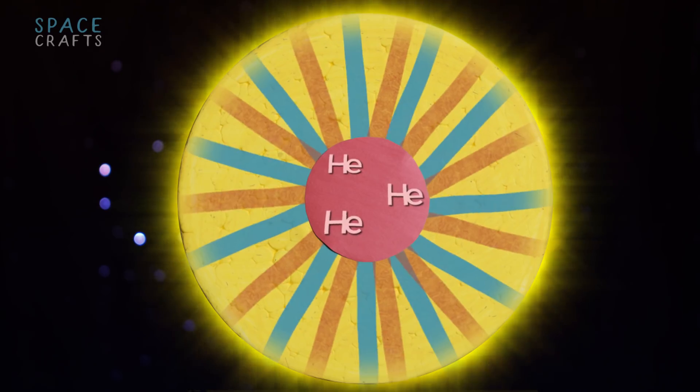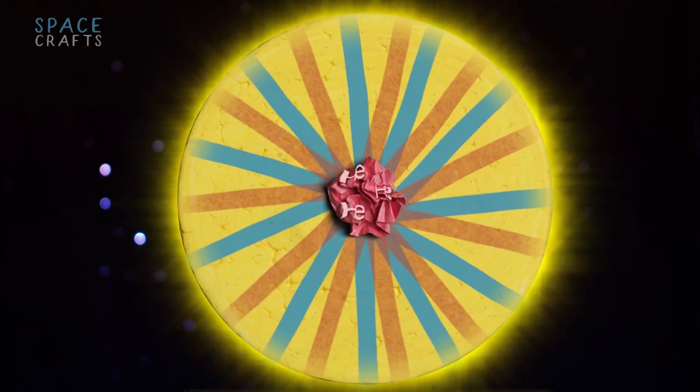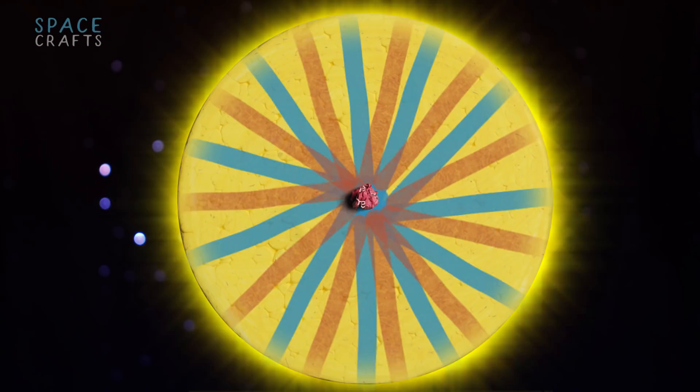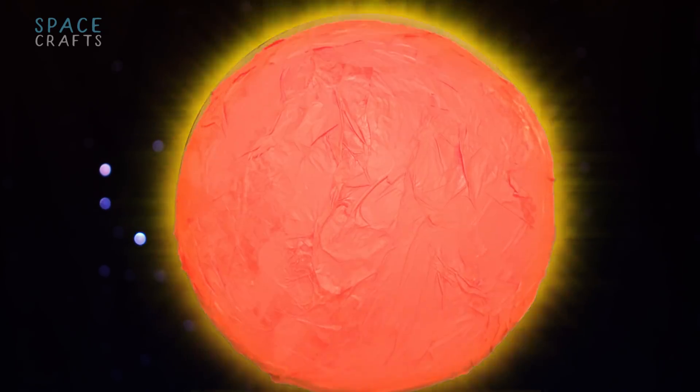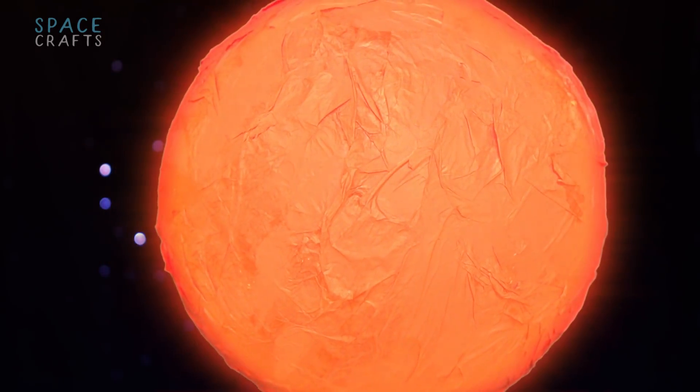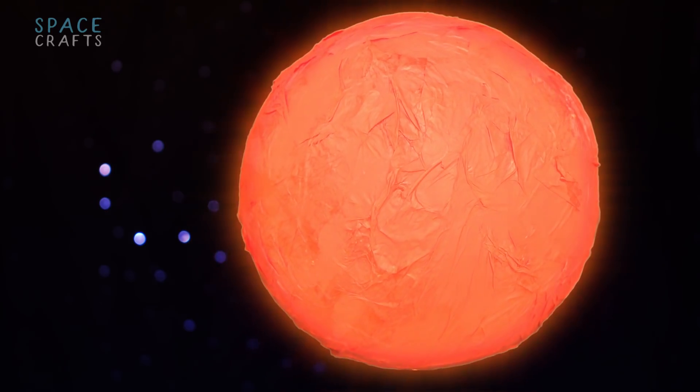When that happens, the star can't hold up against gravity, and its core will start to collapse. The core will get smaller and denser, while its outer shell expands and cools, giving a distinctive red hue.